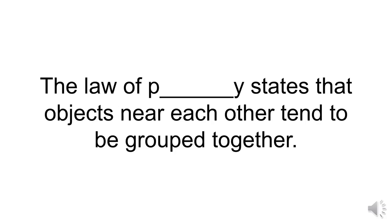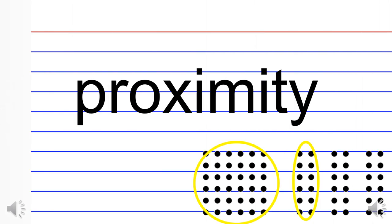The law of p blank y states that objects near each other tend to be grouped together. Which law states this? I'll give you a moment to think. That would be the law of proximity. The same amount of dots are contained here as here, but because these dots are spaced farther apart, each pair of columns is spaced relatively far, we see them as three separate units rather than as one whole unit.